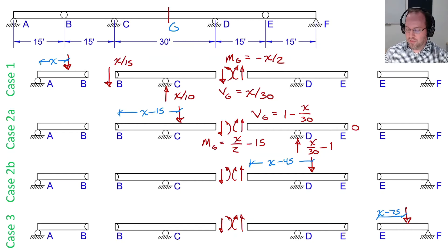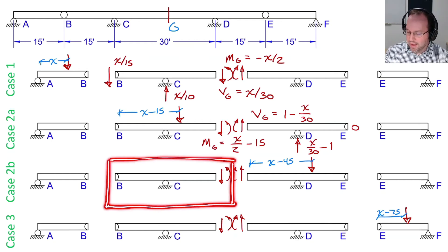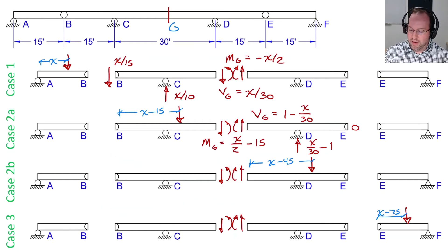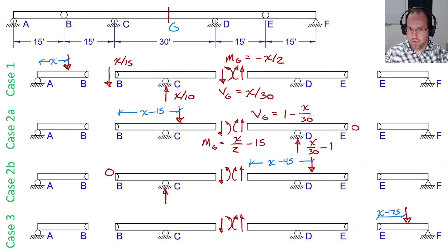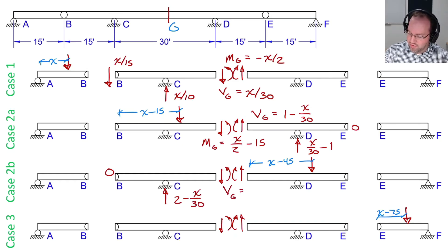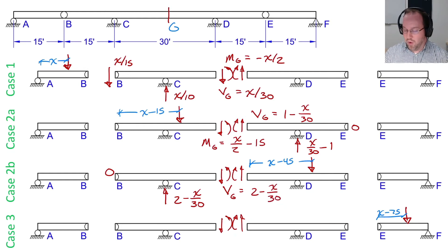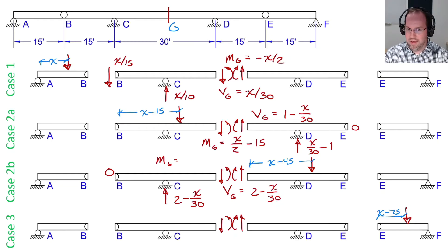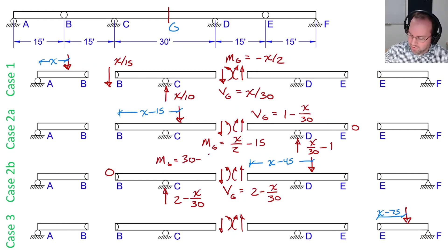Moving on to case 2B, I'll return to the left free body diagram because the statics are easier. The shear at B was equal to zero, and the reaction force at C was two minus X over 30. Therefore, my shear at G, VG, is also two minus X over 30 from sum of forces in the Y direction. And a sum of moments tells me that the moment at G is equal to 30 minus X over two.